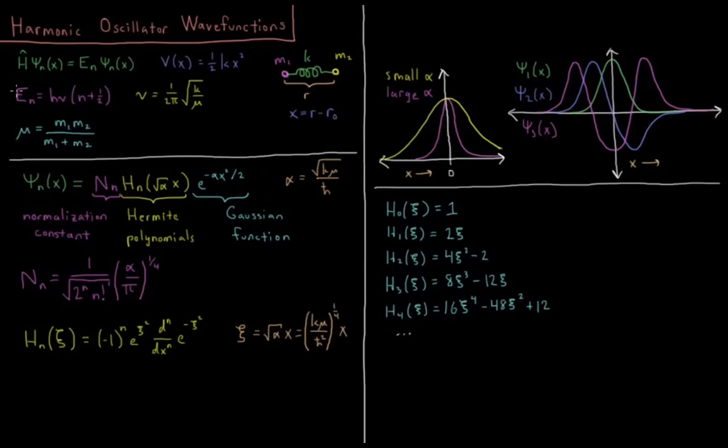So those are all the energy levels that we've been discussing in their spectra and the potential energy. But what are the wave functions of the harmonic oscillator? So the wave functions of the harmonic oscillator depend on x and they depend on the quantum number n that we have, lowest value being zero.